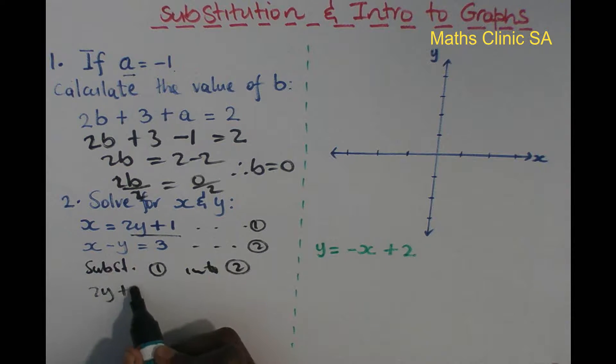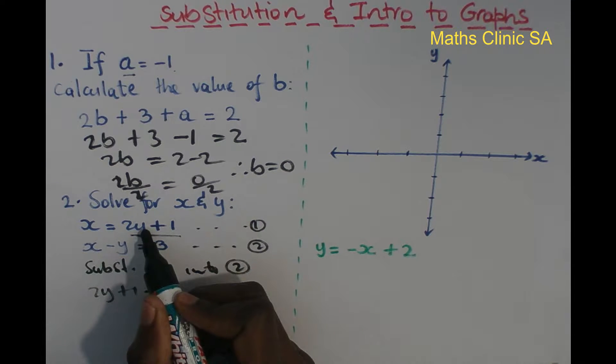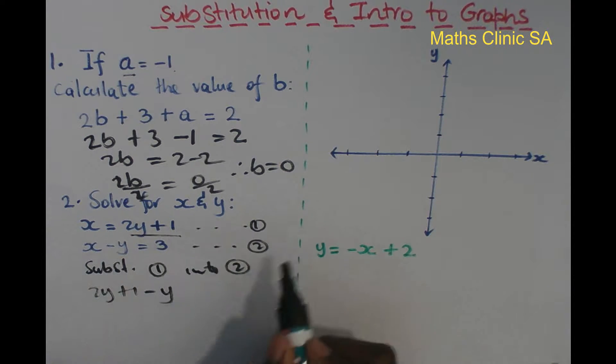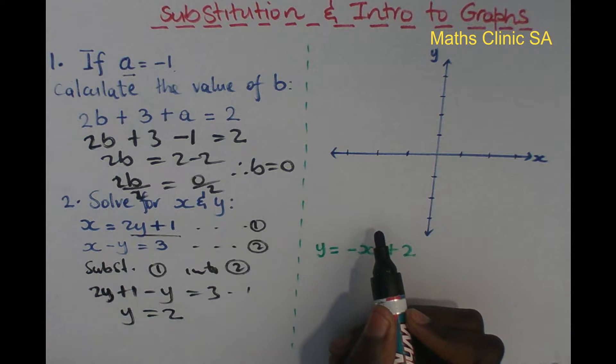Substituting x = 2y + 1 into the second equation: 2y + 1 - y = 3. So 2y - y = 3 - 1, which gives y = 2.